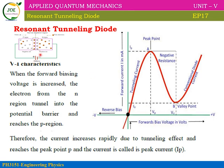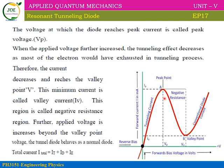If we increase the battery voltage and note the corresponding current values, then plot them, we see that as voltage increases, current increases. At a certain point, we reach the maximum current, which is called the peak current. The corresponding voltage at that point is called the peak voltage.